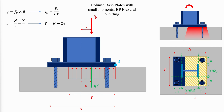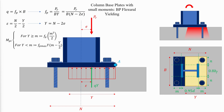The bearing pressure between the concrete and the base plate causes bending in the base plate for the cantilever length M in the case of strong axis bending and cantilever length N for weak axis bending. For strong axis bending, the bearing stress Fp is calculated accordingly. The required plate bending moment per unit width is then determined for two cases and compared to the available bending resistance per unit width of the plate.